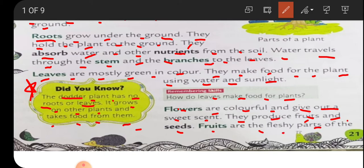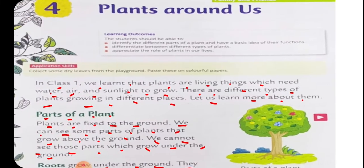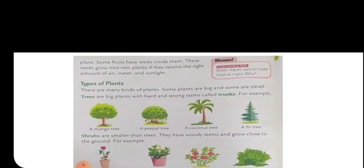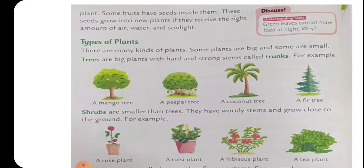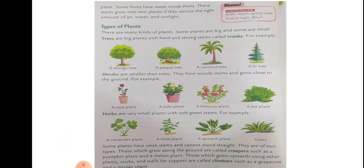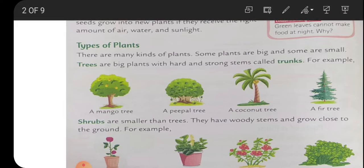Fruits are the fleshy parts of the plant - the food which is made by the plants and stored there. Some fruits have seeds inside them. These seeds grow into new plants if they receive the right amount of air, water, and sunlight.